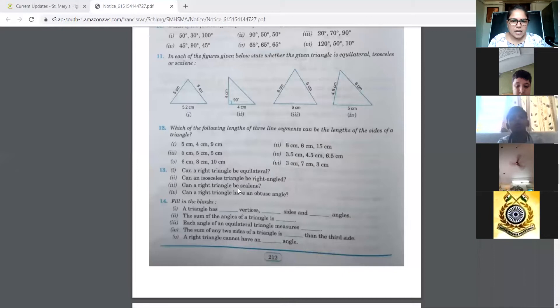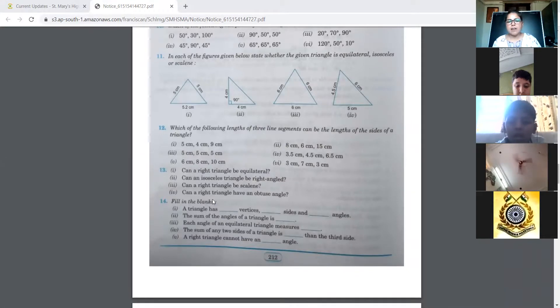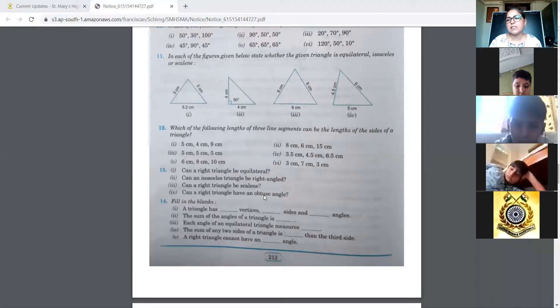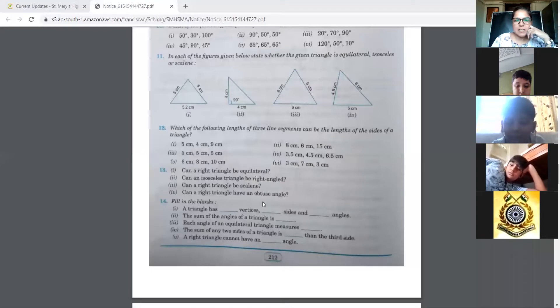Then can a right triangle be scalene? Means can all three sides be different? So that is also possible. You write yes. Then can a right triangle have an obtuse angle? So that's not possible, because a right angle triangle is already 90 degrees. Then if you have an obtuse angle that is more than 90 degrees, the sum will exceed 180 degrees. So this is not possible.